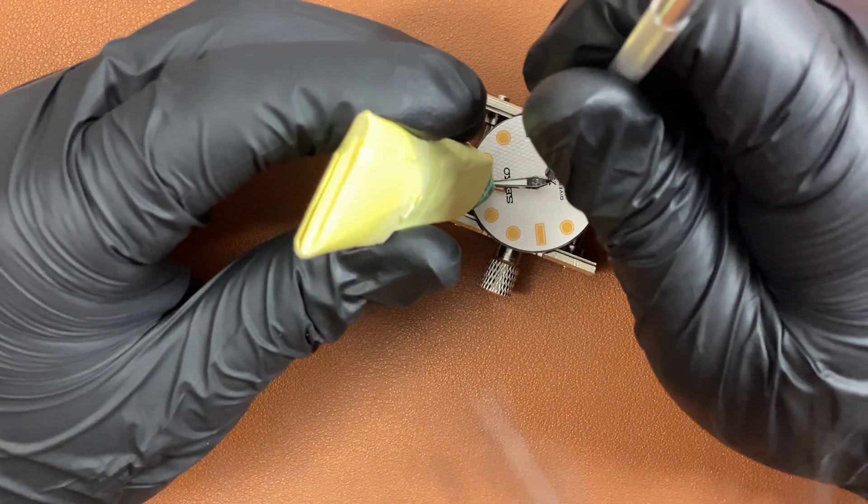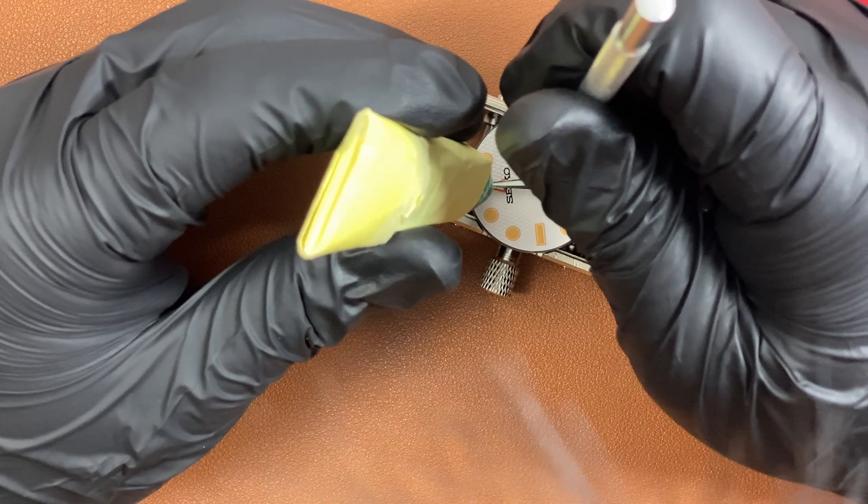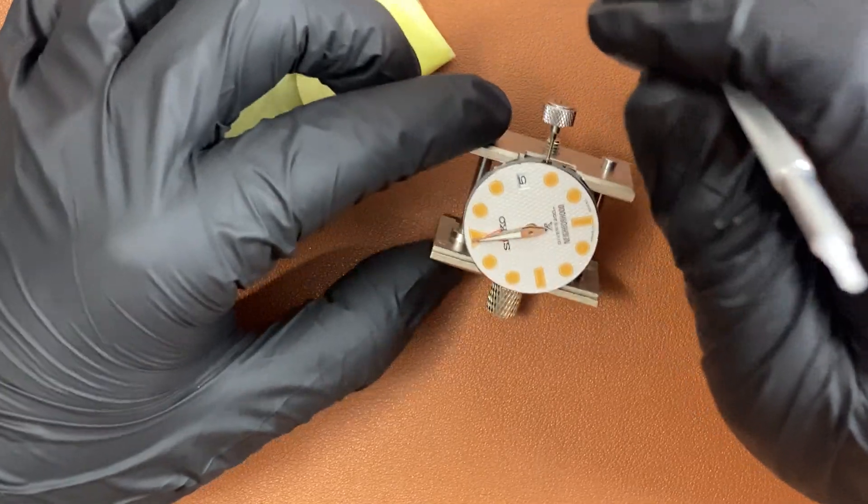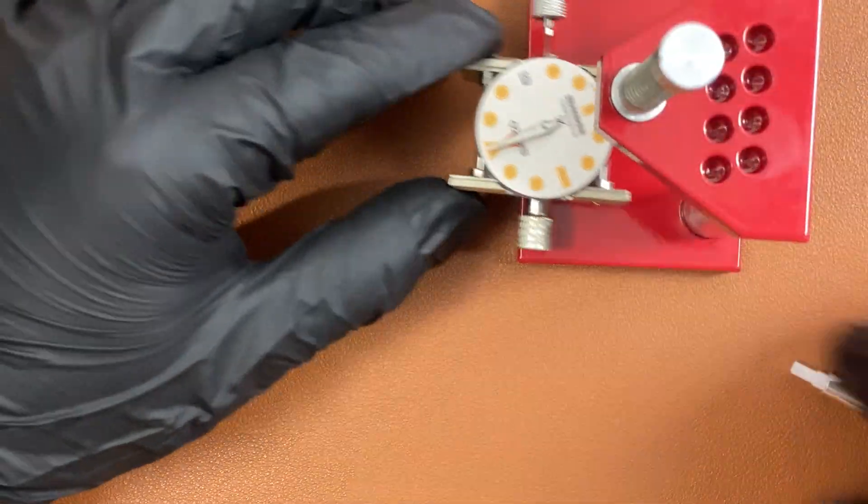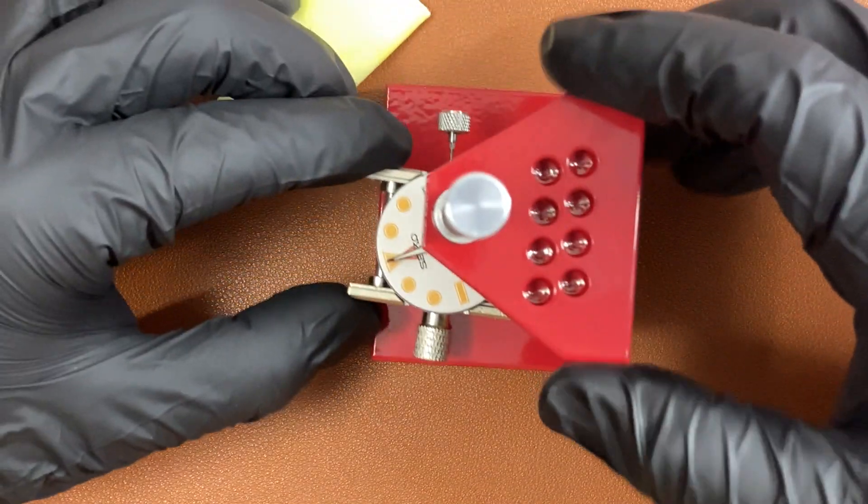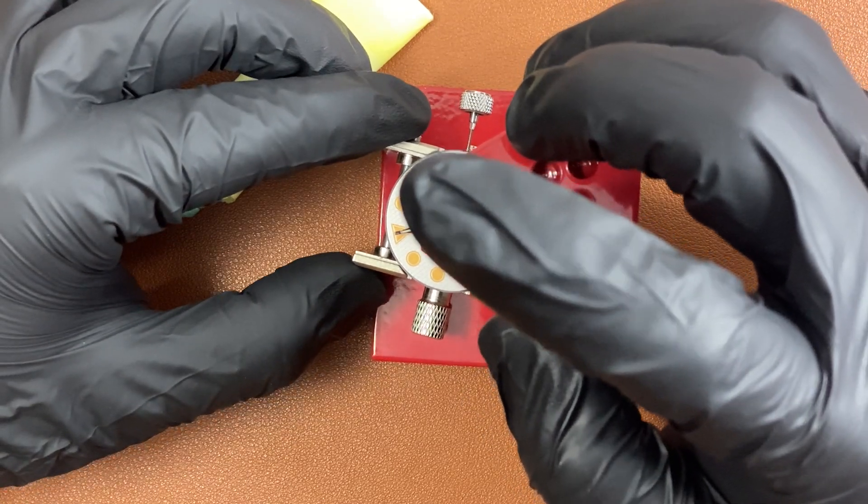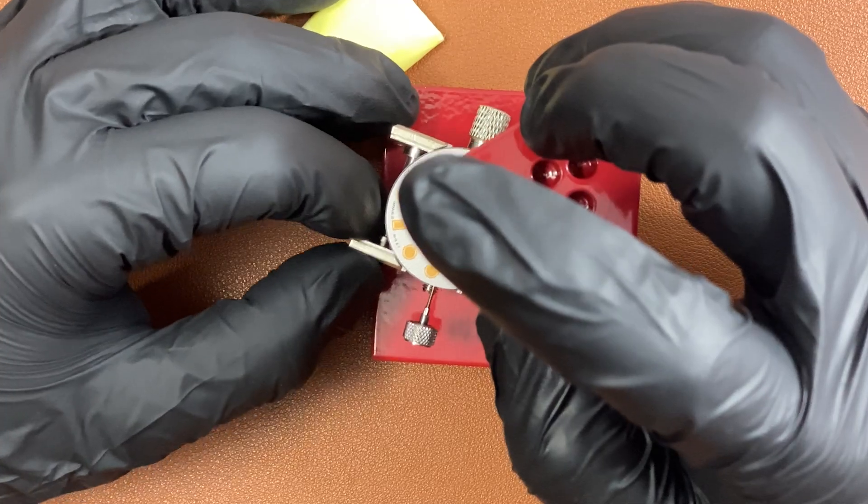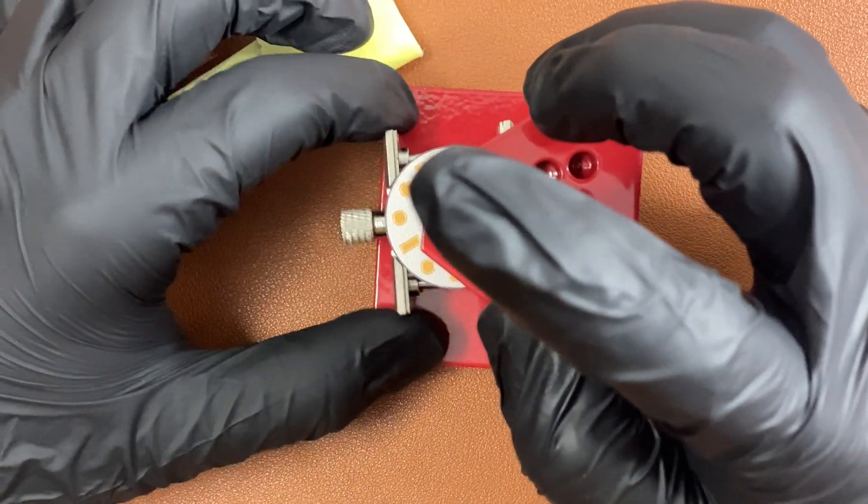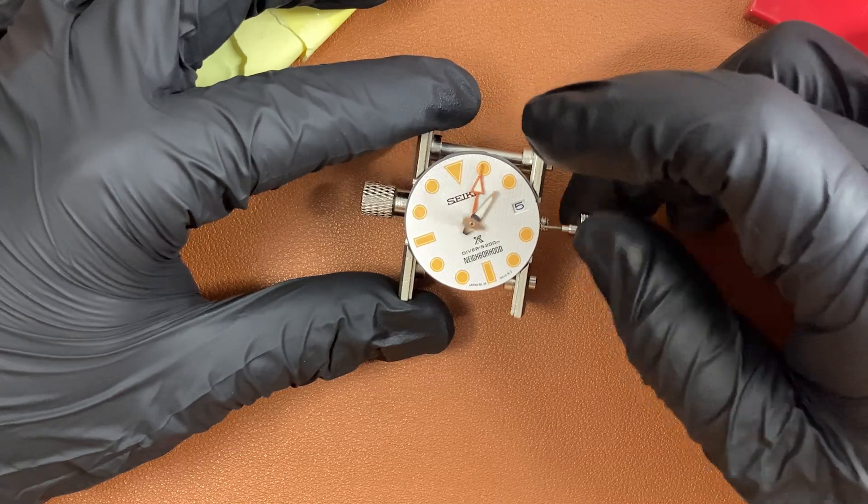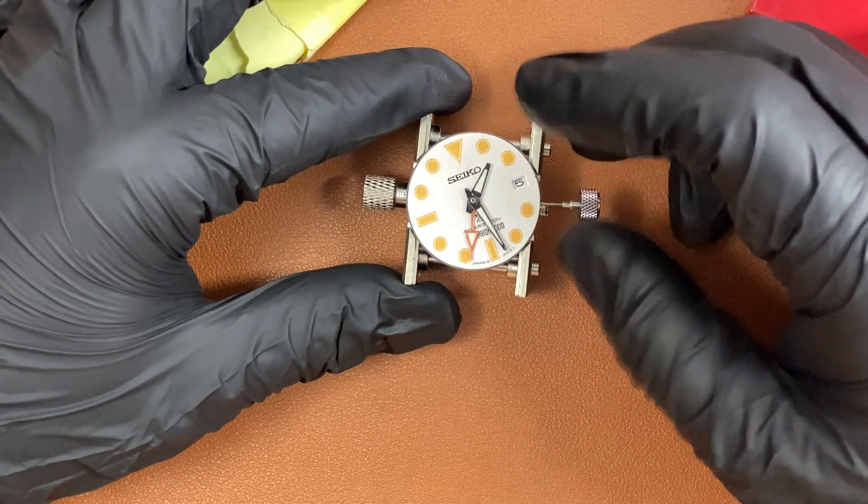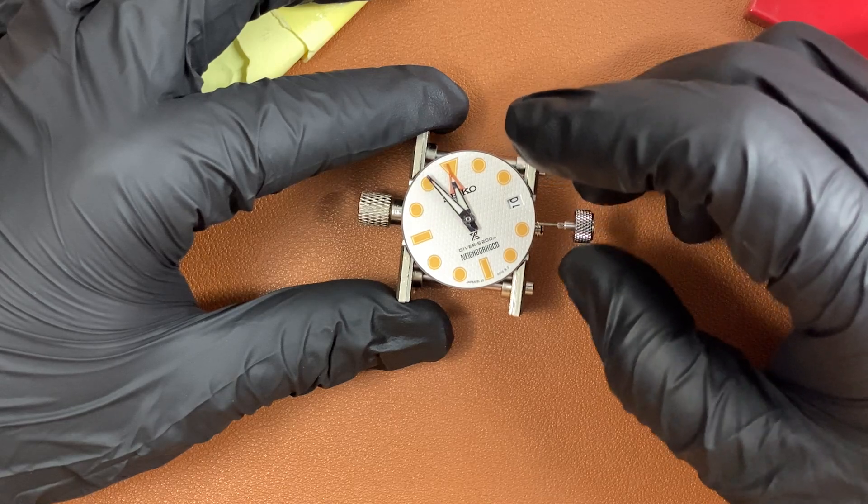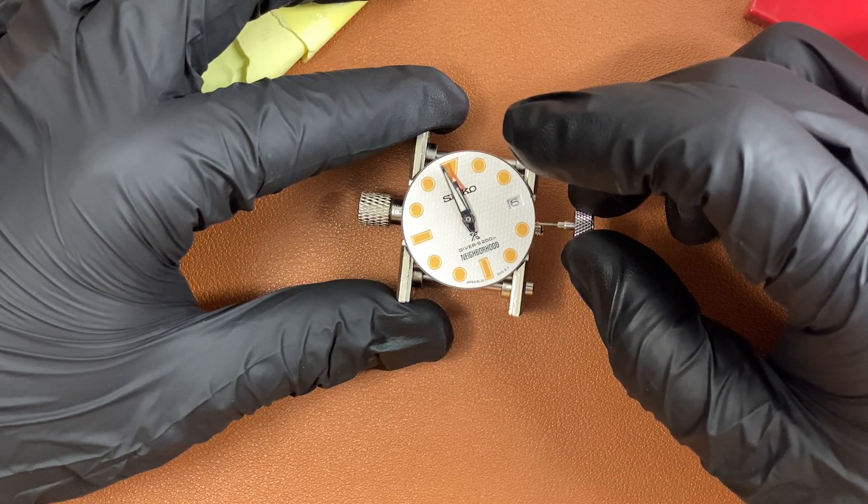Now it's the minute hand. Just like what we did with the hour hand, pointing everything to 12 o'clock and installing using the hand pusher tool. Remember to turn the movement while pressing the hand down. That way you can ensure a much more even press on the hand. Again, just to test out the minute hand. Everything looks really good so far. Perfect.